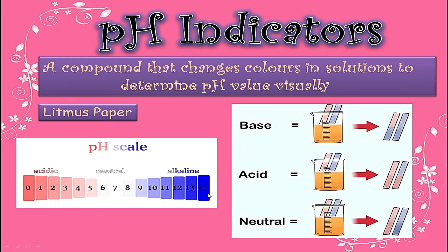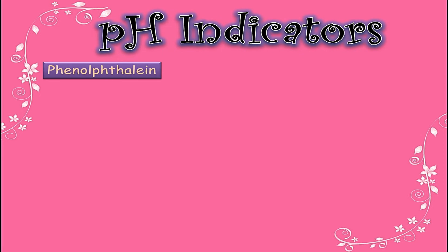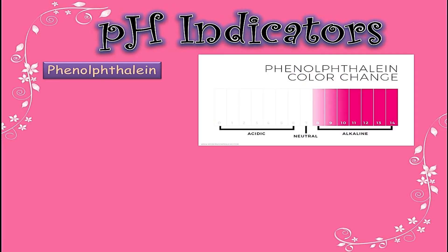The stronger the acid, the darker the color. Similarly, the stronger the base, the darker the color will be. The next pH indicator is phenolphthalein. It can also change its color — in acidic medium and in neutral medium it remains colorless, but in basic or alkaline solution it converts to pink color. The strength of the color shows the strength of that base.